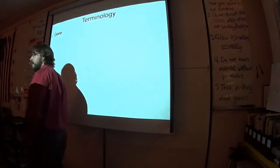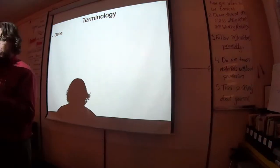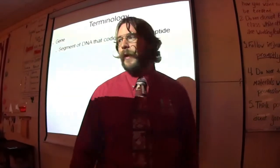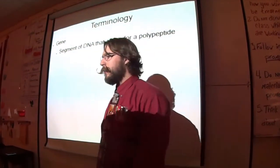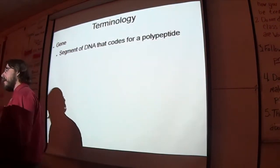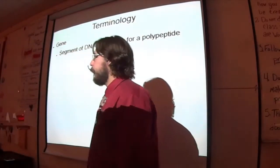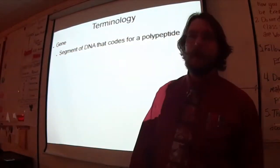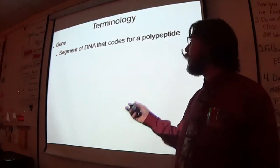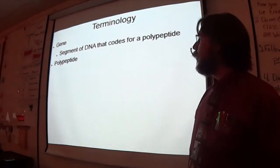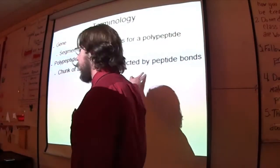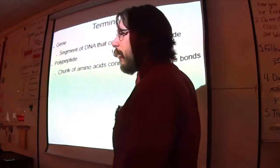First things first — remind me what a gene is. A polypeptide. Yeah, the instructions to make a polypeptide. Remember, several polypeptides can come together and make a protein. Some proteins are really small, so it would just be one polypeptide. Your gene is a segment of DNA that contains the instructions for how to make that polypeptide — it codes for the polypeptide. A polypeptide is a chunk of amino acids connected with peptide bonds.